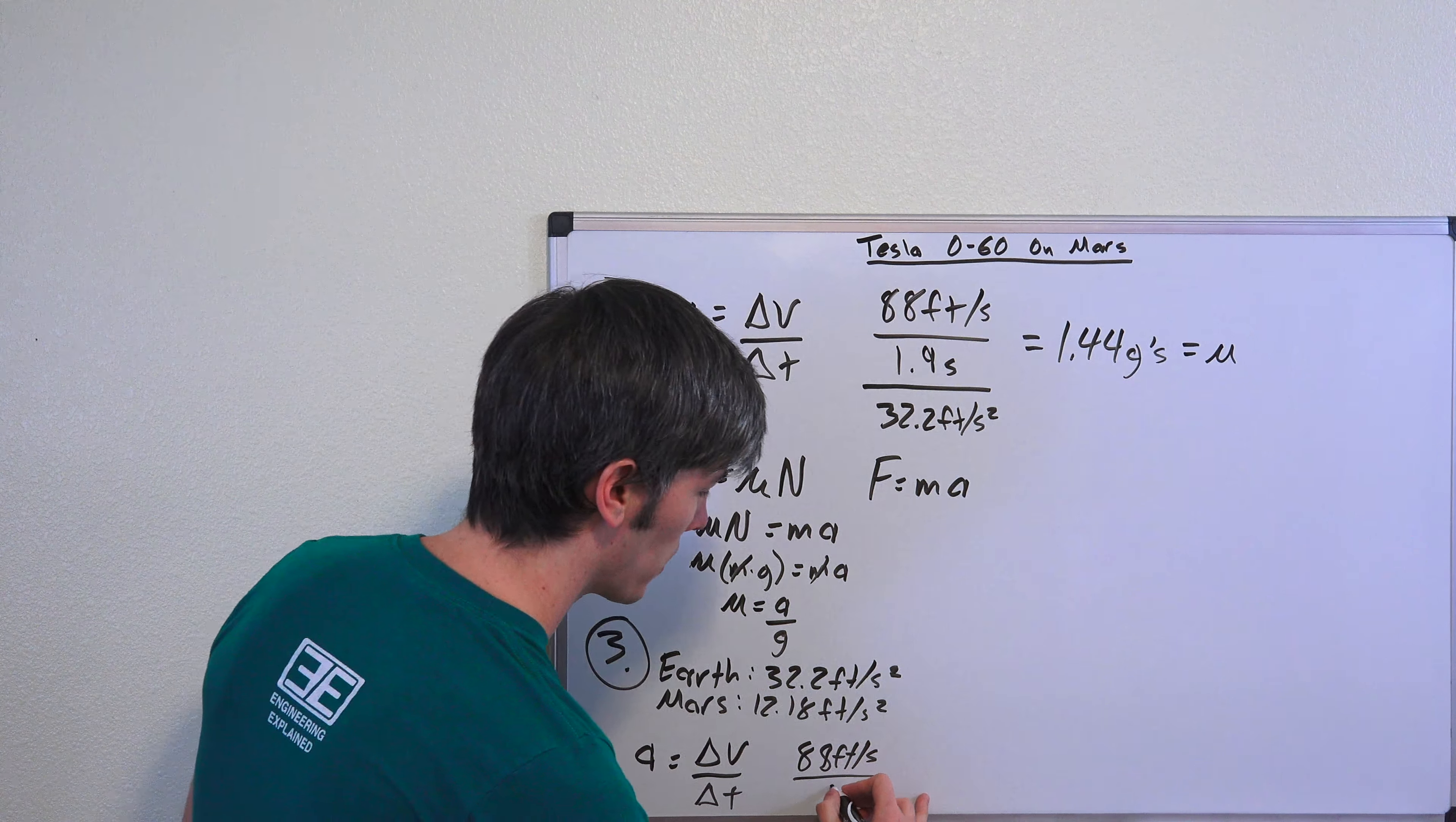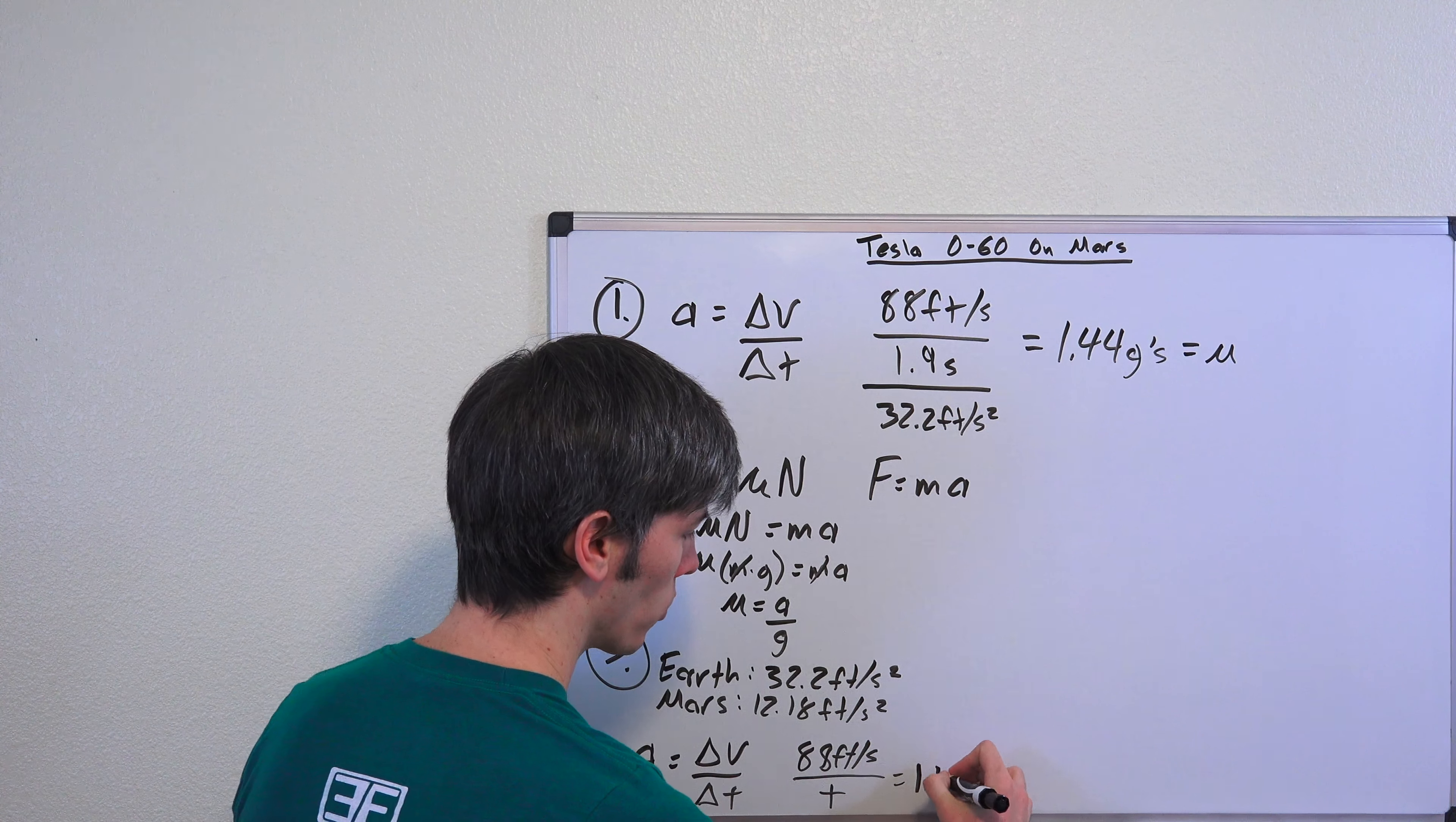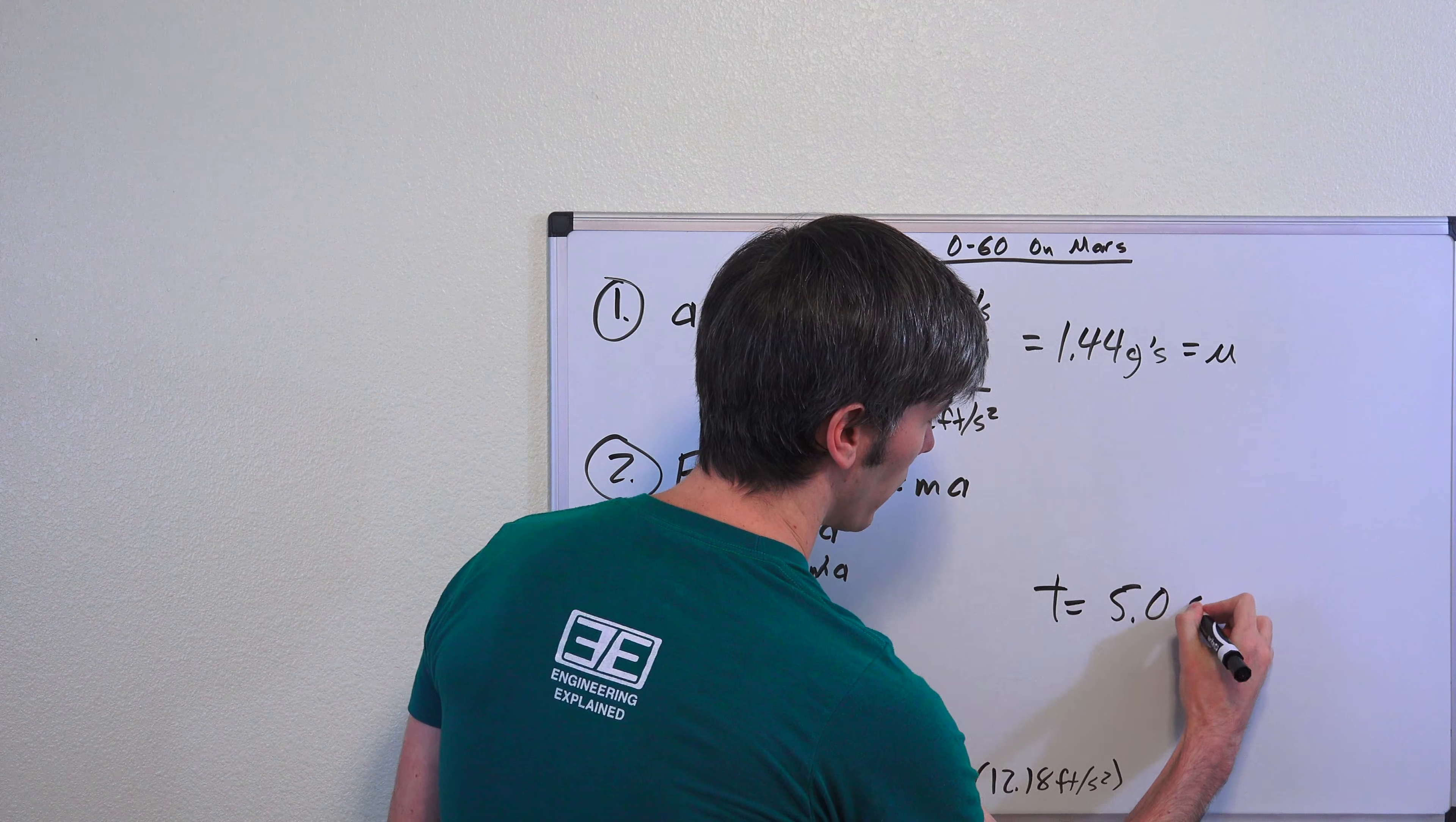Well acceleration is equal to the frictional coefficient multiplied by gravity. So our frictional coefficient is 1.44, gravity is 12.18 feet per second squared. And we can solve for time. Time equals 5 seconds.